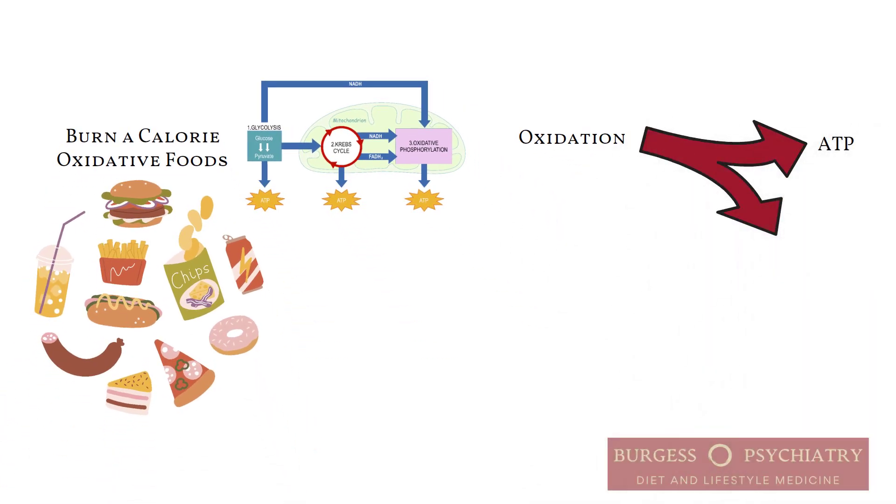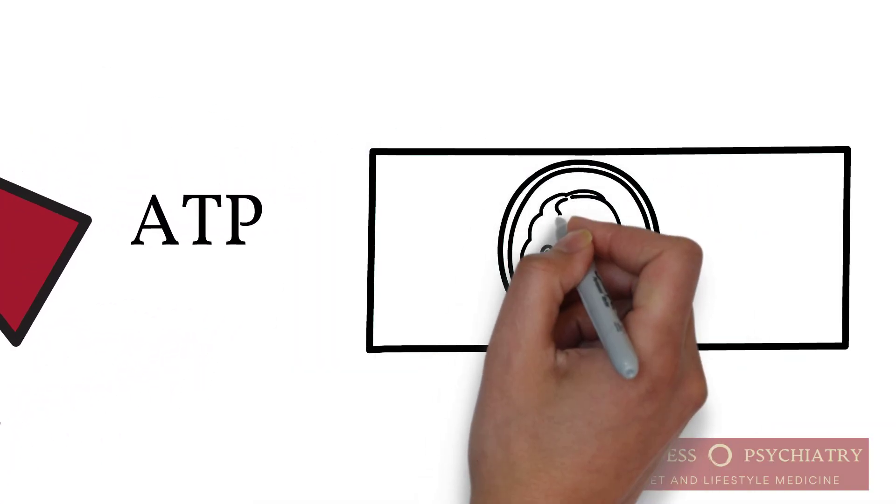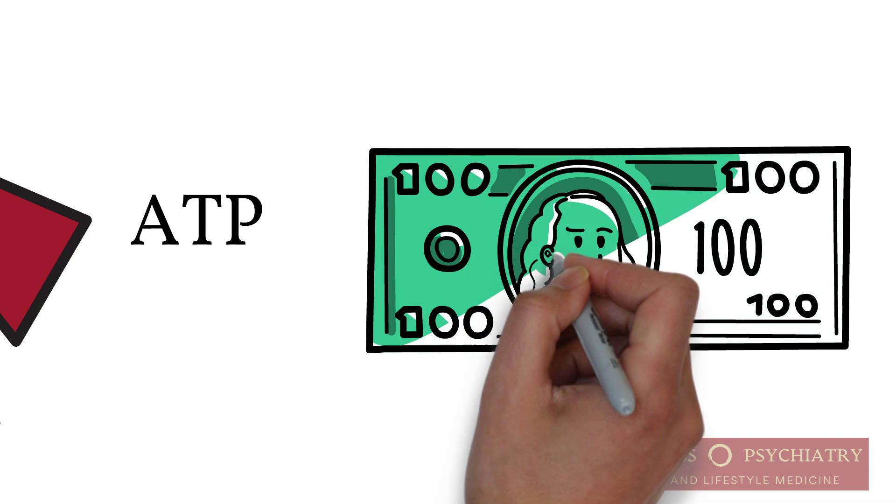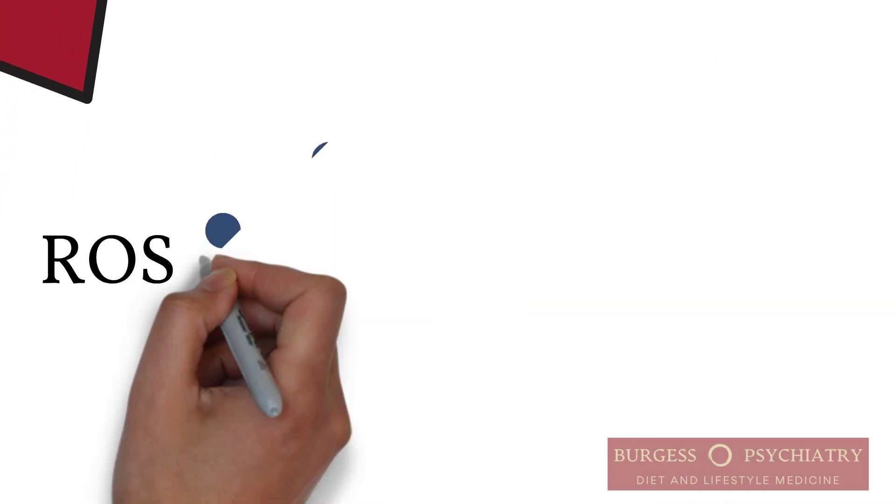You end up with an ATP and a reactive oxygen species. Now, you want the ATP. It's the universal currency of the body for every reaction that takes place. You don't want the reactive oxygen species.